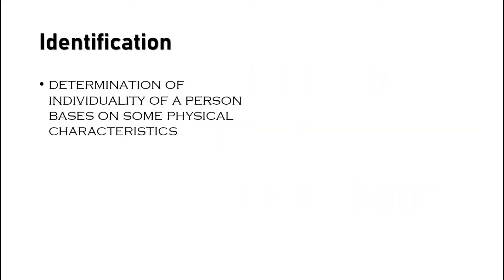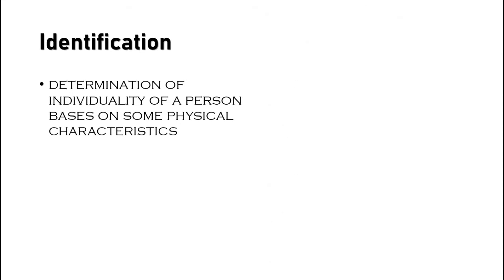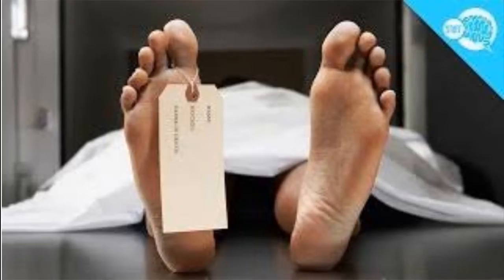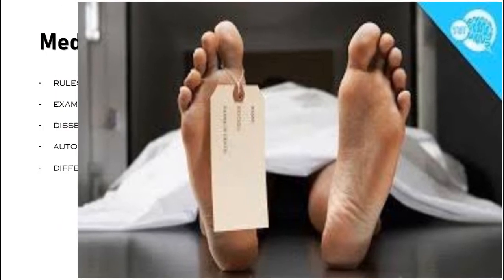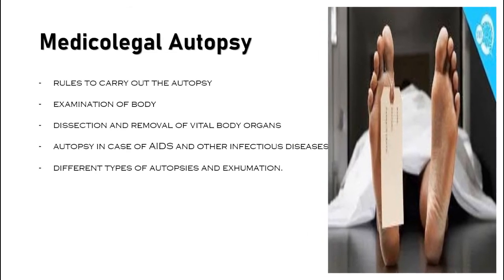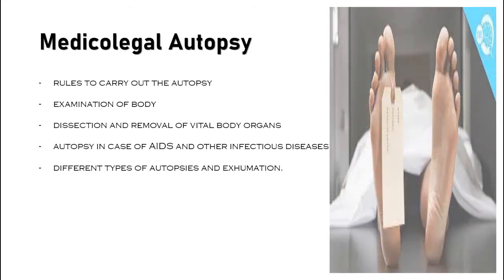Next is Identification, which includes the determination of individuality of a person based on some physical characteristics. Next is Medical Legal Autopsy, also known as a primary tool of forensic medicine, which is also called post-mortem. This includes rules to carry out the autopsy, examination of the body, dissection and removal of vital body organs for analysis, how to carry out the autopsy in case of AIDS and other infectious diseases, different types of autopsies, and exhumation.